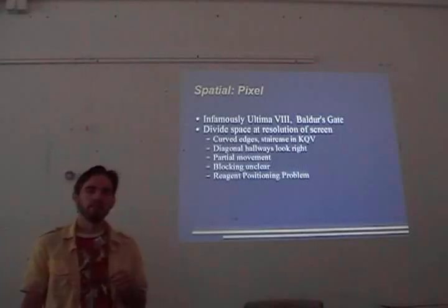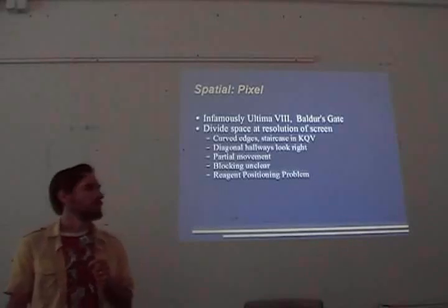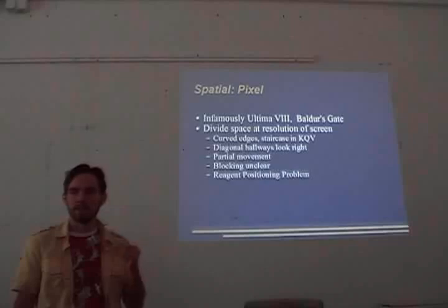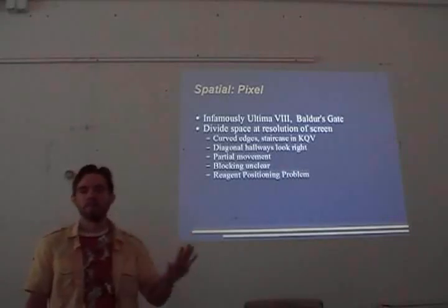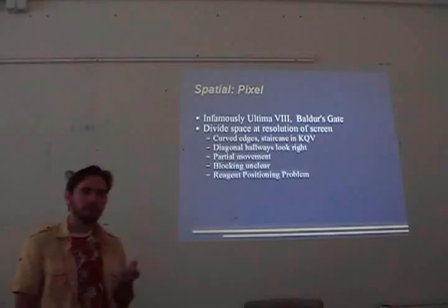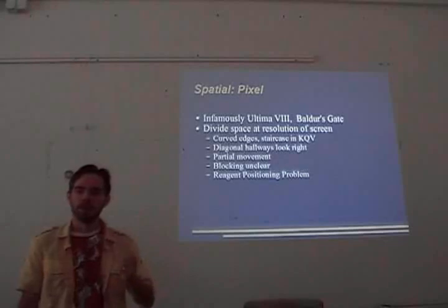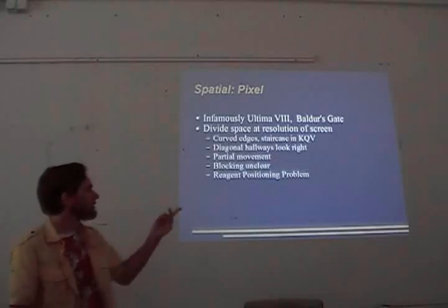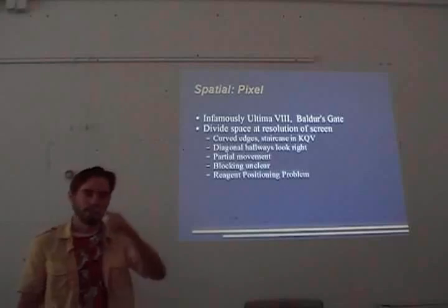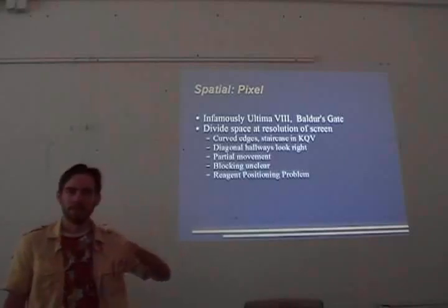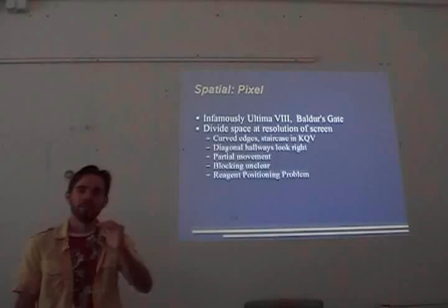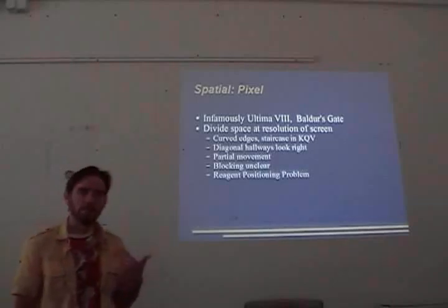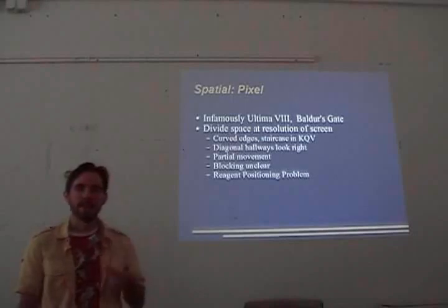The next level of discretization lets characters move within a tile, so we basically have a pixel level or very fine grid the size of the screen pixels. Ultima 8 infamously switched to this method; Baldur's Gate also used it — their backdrops were complete bitmaps, not even tiles for the background. This allows curved edges that work well, proper diagonal hallways without the staircase artifact from coarse tile resolution, and partial character movement so you don't have to move an entire tile every turn.